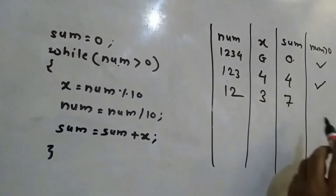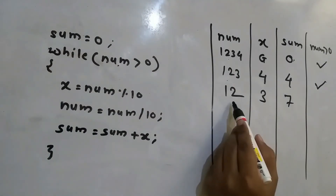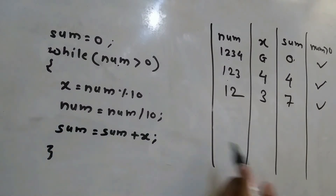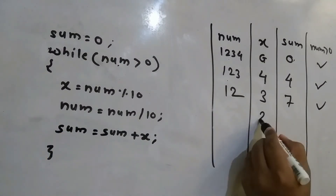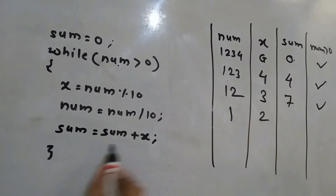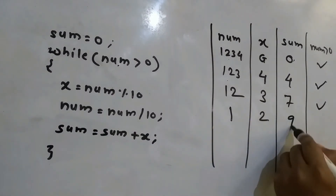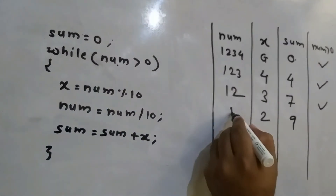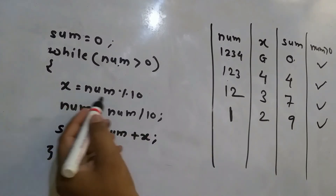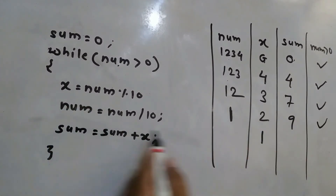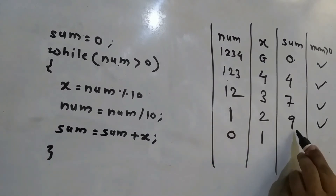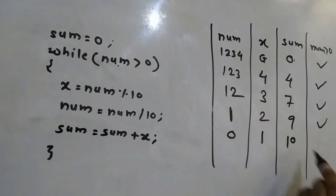In the next iteration, 12 is greater than 0. x equals 12 mod 10, which is 2. num equals num divided by 10, which becomes 1. Sum equals 7 plus 2 equals 9. In the following iteration, 1 is greater than 0. x is 1 mod 10 equals 1. num becomes 0. Sum equals 9 plus 1 equals 10.